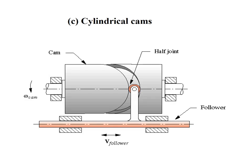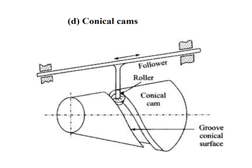Cylindrical cams: in this type of cam, a cylindrical shape of cam is used to impart desired motions. Conical cams: in conical cams, a cone type cam is used to impart desired motions to the follower.